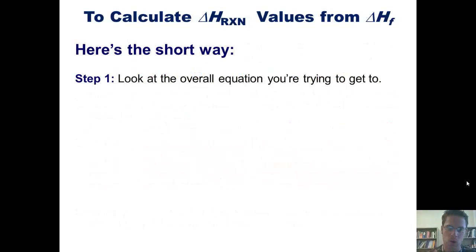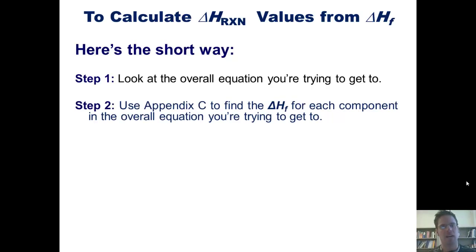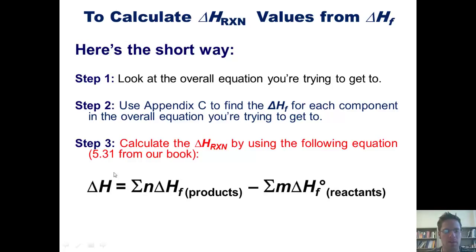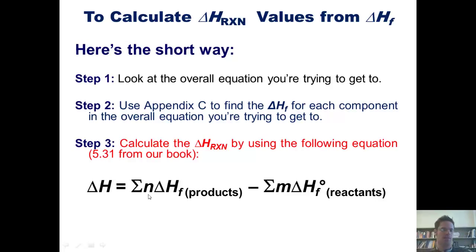Here are the steps for the short way. Step 1: Look at the overall equation you're trying to get to. Step 2: Use Appendix C from the back of our text to find the enthalpy values of formation, or delta H f's, for each component in the overall equation. Step 3: Calculate the overall enthalpy of reaction, delta H reaction, using the following equation from our book: the overall enthalpy of reaction equals the sum of the individual enthalpies of formation for the products minus the sum of those for the reactants, each multiplied by their respective coefficients. If you don't understand all this, don't worry — I'll show you how to do it now.